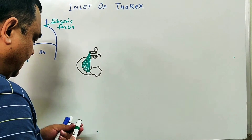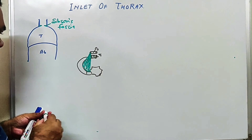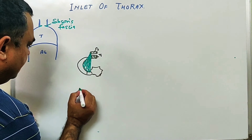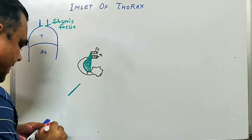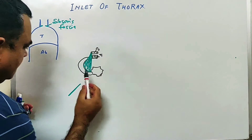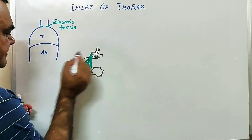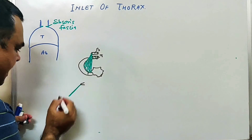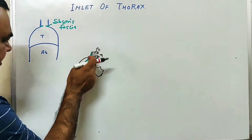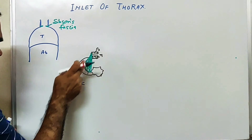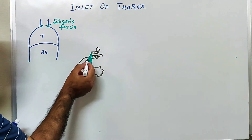If you look at a section at this level, here will be the position of the fascia. It attaches with the transverse process superiorly and inferiorly with the rib. Here is the position of the first rib. If you put a section like this, here is the transverse process and this is the medial margin of the rib.